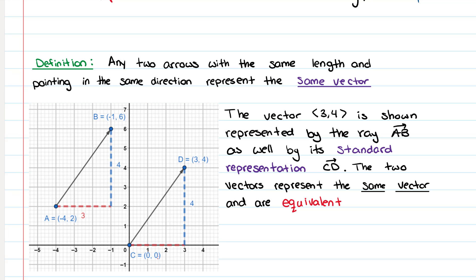Any two arrows with the same length and pointing in the same direction represent the same vector. So for example, the vector is shown represented by the ray as well as its standard representation. The two vectors represent the same vector and are equivalent.